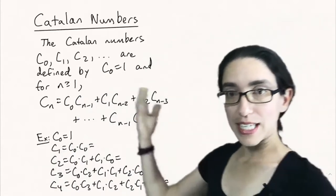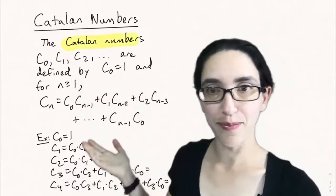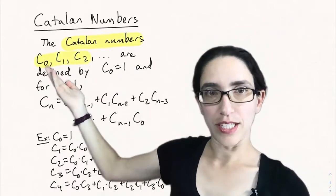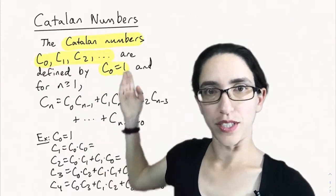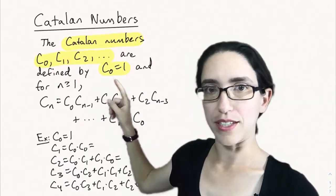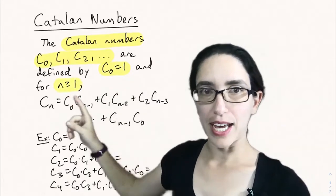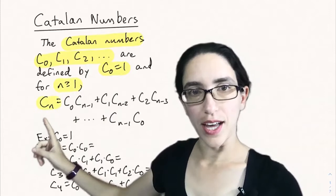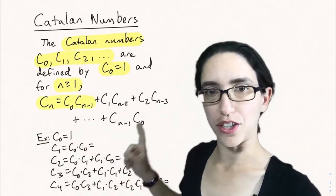The Catalan numbers are a sequence defined recursively by C0, C1, C2, etc., where the initial value is C0 equals 1. And then for any n greater than or equal to 1, Cn is expressed in terms of the previous terms as follows.